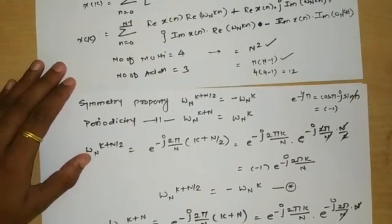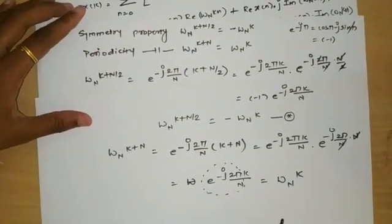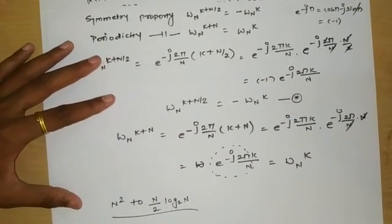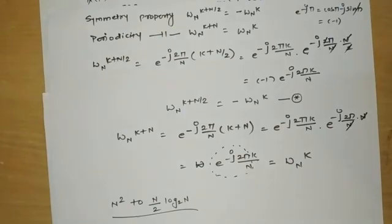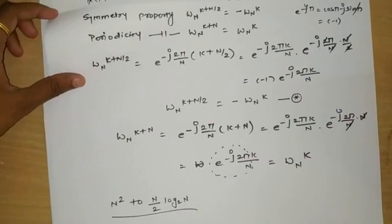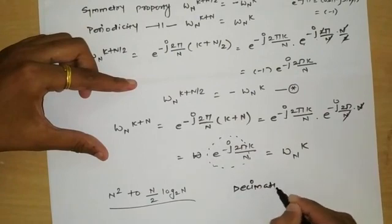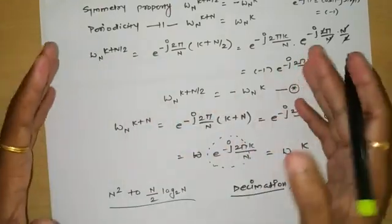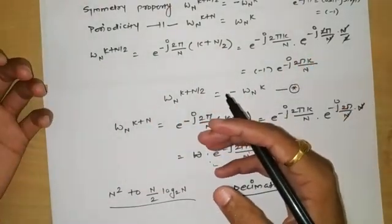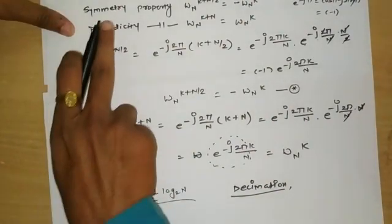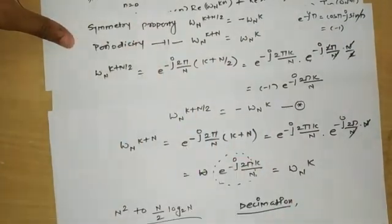Using these two properties, FFT reduces the number of complex multiplications from N² to (N/2)log₂N. This is possible using the divide and conquer approach called decimation, where the given sequence is divided into smaller segments, the Fourier transform of each segment is found, and then they are combined. By using symmetry and periodicity properties, the number of complex additions and multiplications is significantly reduced.